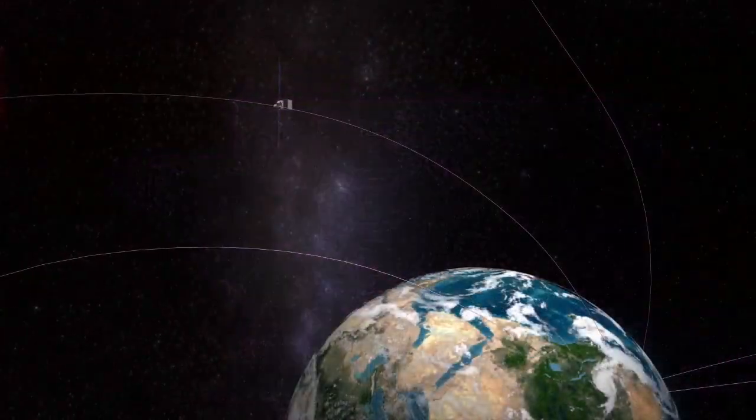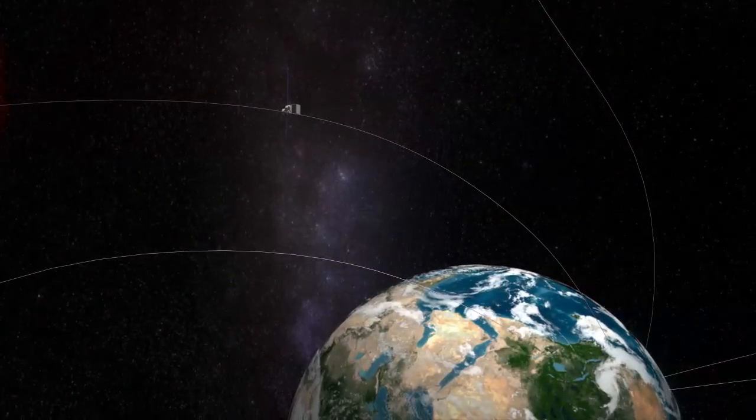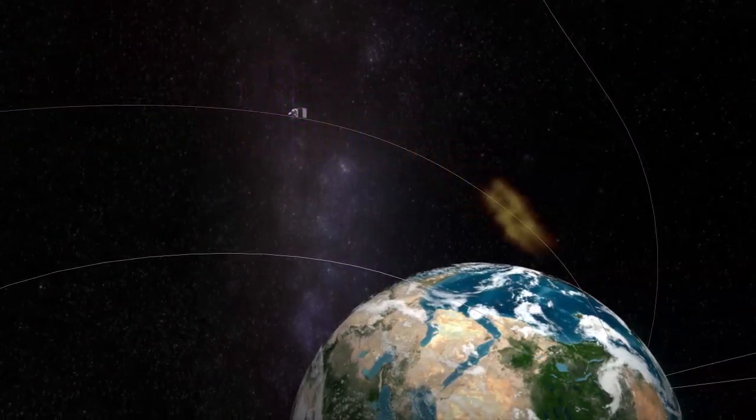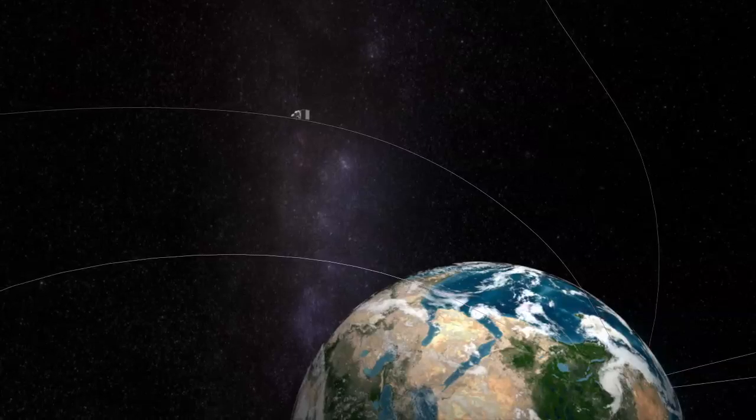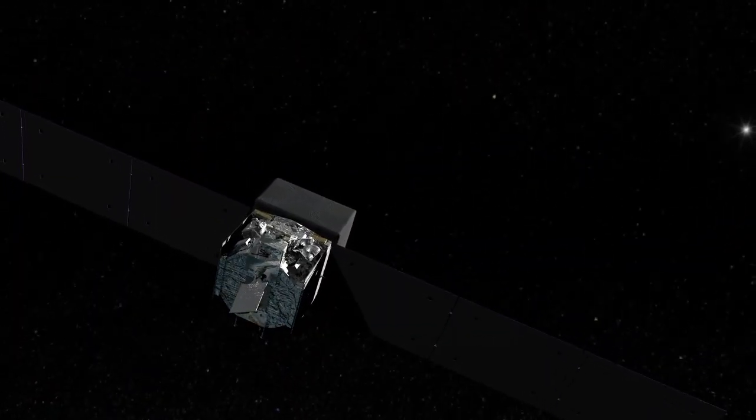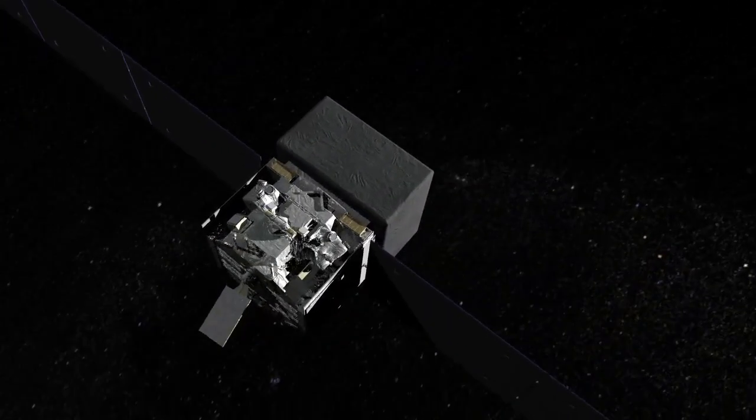A fraction of a second later, some of the particles were bounced back along the same magnetic field line. They again passed through Fermi and again produced gamma rays. The spacecraft has observed this phenomenon on at least four other occasions.